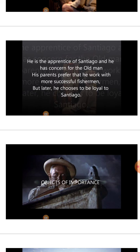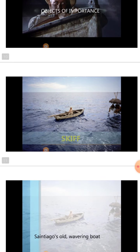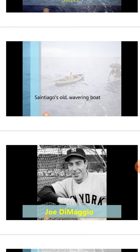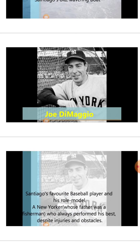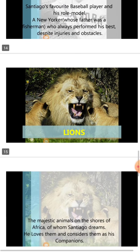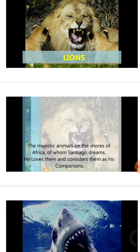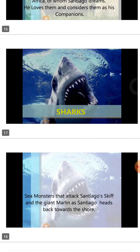Key objects of importance in this novel: the Skiff, which is Santiago's old rowing boat. Joe DiMaggio, a favorite baseball player and Santiago's role model — a New Yorker whose father was a fisherman who always performed his best despite injuries and obstacles. Lions — the majestic animals on the shores of Africa, of whom Santiago dreams and considers as his companions. And sharks — sea monsters that attack Santiago's skiff and the giant marlin.